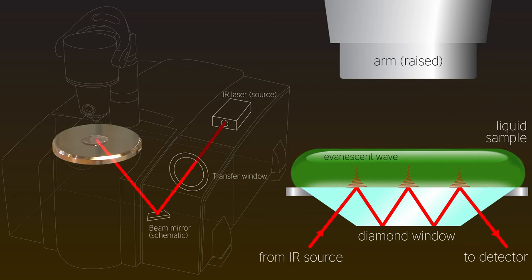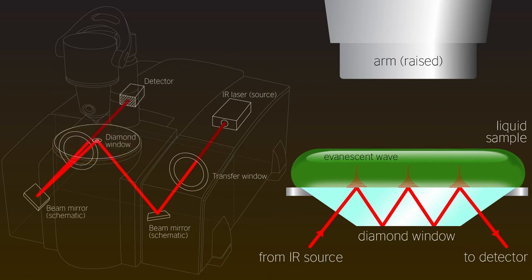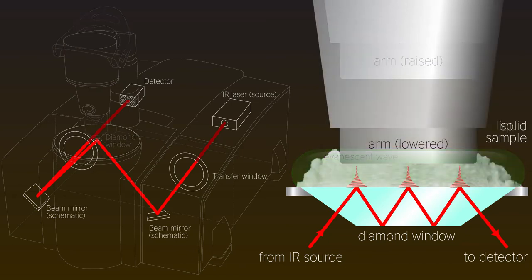As it bounces along, it interacts with the sample through an evanescent wave. It is during this interaction that the molecules of the sample are vibrated and the chemical information collected is sent along with the IR light back to the detector. Liquid samples make enough contact so that the evanescent wave penetrates deep enough to allow enough information to be collected. Solid samples, however, require the arm to push them down to ensure enough contact is made. If this doesn't happen, the spectrum will be very poor as not enough information is being sent along from the sample.